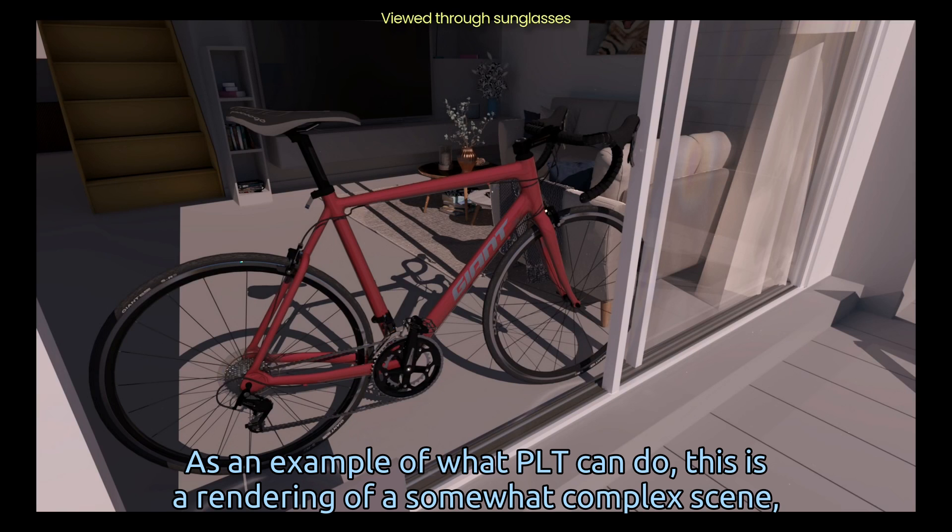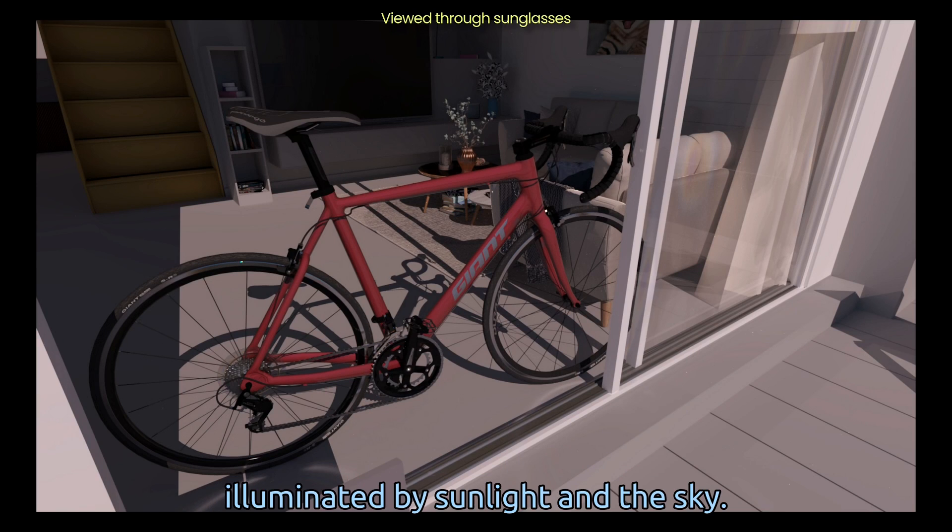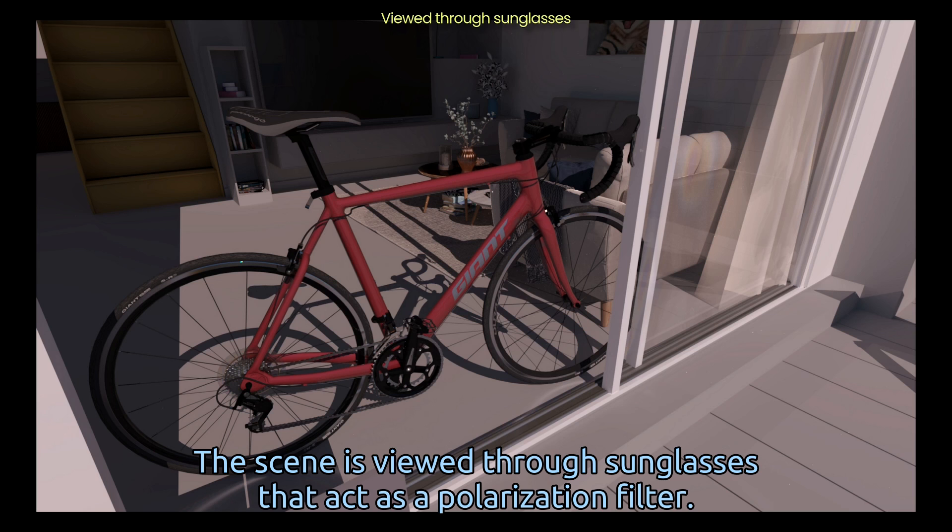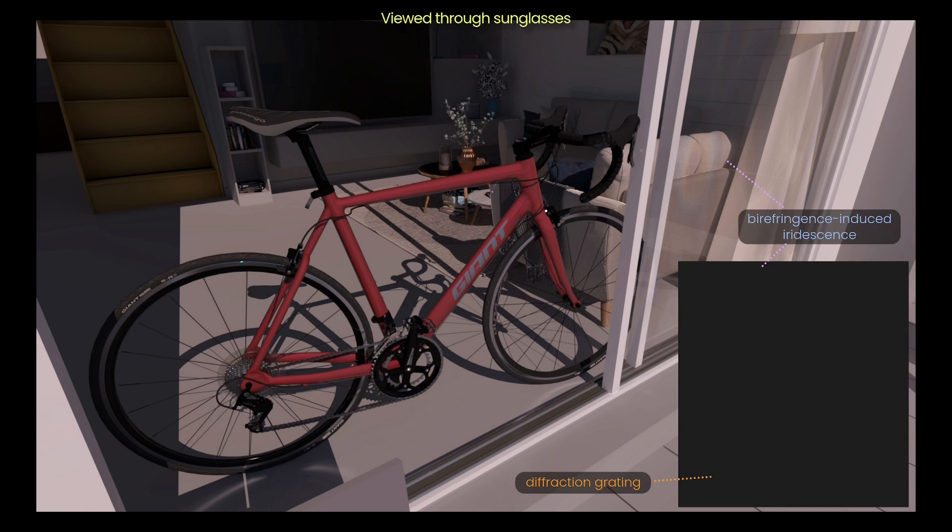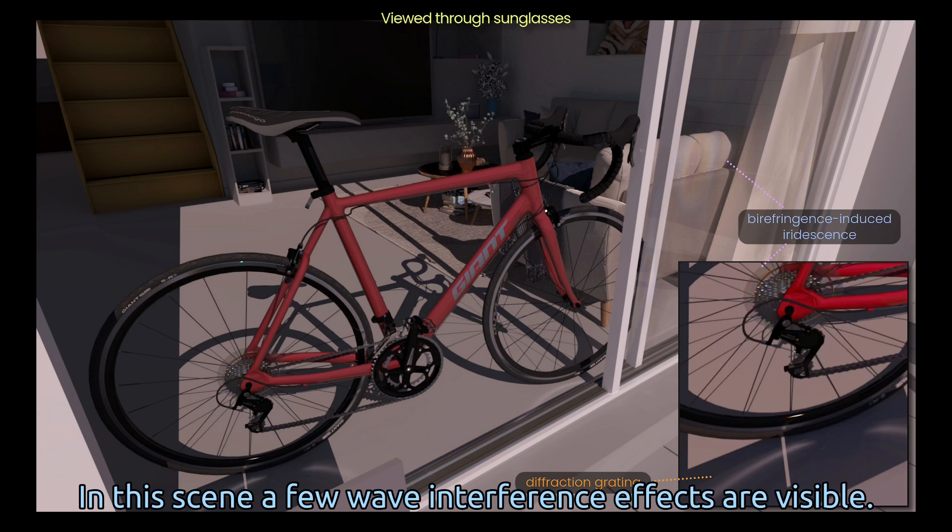As an example of what PLT can do, this is a rendering of a somewhat complex scene, illuminated by sunlight and the sky. The scene is viewed through sunglasses that act as a polarization filter.